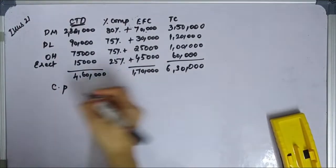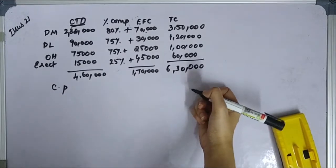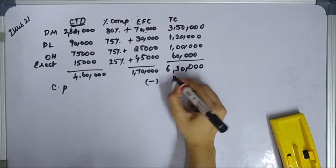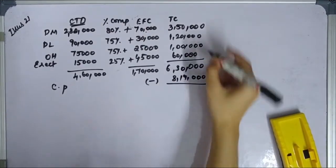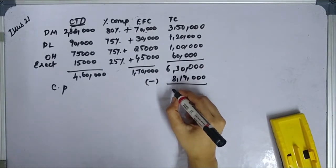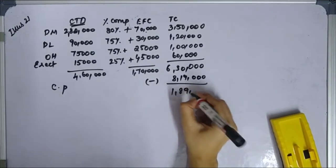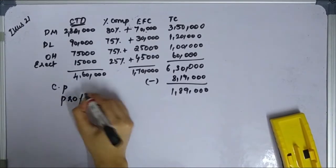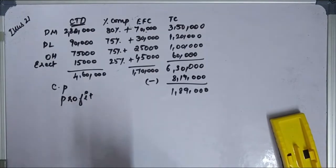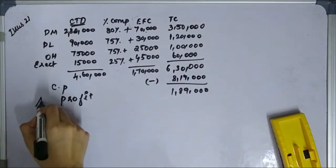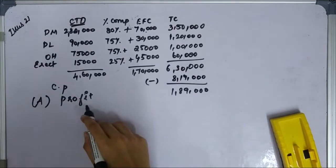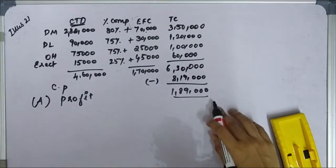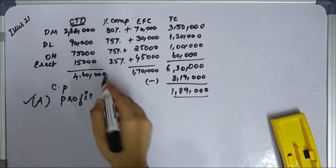The contract price is 8,19,000. Total cost is 6,30,000. So contract price minus total cost gives 1,89,000 — that is the profit. Therefore, the estimated profit on completion of the contract is 1,89,000. That answers Part A.